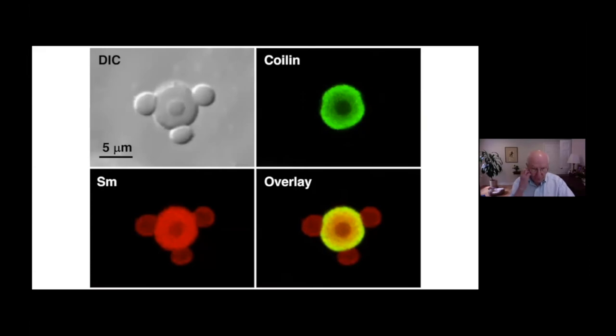Here's a histone locus body with attached speckles shown by differential interference contrast microscopy in the upper left image, and after specific staining in the other three panels. The histone locus body contains the well-known protein named coilin, as well as SM proteins associated with small nuclear RNAs.